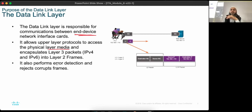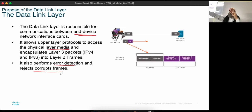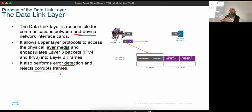The data link layer also performs error detection and rejects corrupt frames. Error detection is common across many layers because different boxes can get corrupted in different ways. Information flowing on wires or any network media can get corrupted at any location, so each layer has its own error detection. Multiple layers do error detection just to make sure data gets correctly from one point to another.